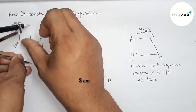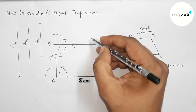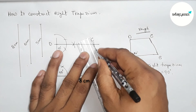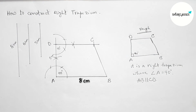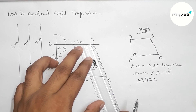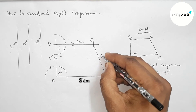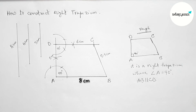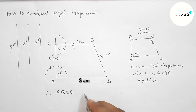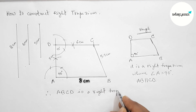Taking the length of 6 centimeters with the compass, placing it and cutting to mark point C, then joining side BC. This side is 6 centimeters. Now measuring side BC — it comes out to approximately 5.5 centimeters. Therefore, we get our required right trapezium ABCD.